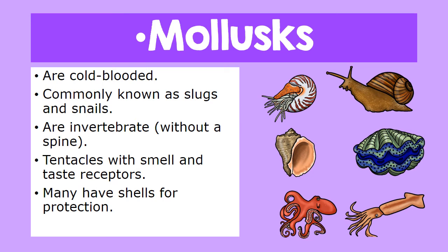Let us now learn about the first group: the molluscs. Molluscs are cold-blooded. They are commonly known as slugs and snails. They are invertebrates without a backbone. They have tentacles with smell and taste receptors. Many have shells for protection.